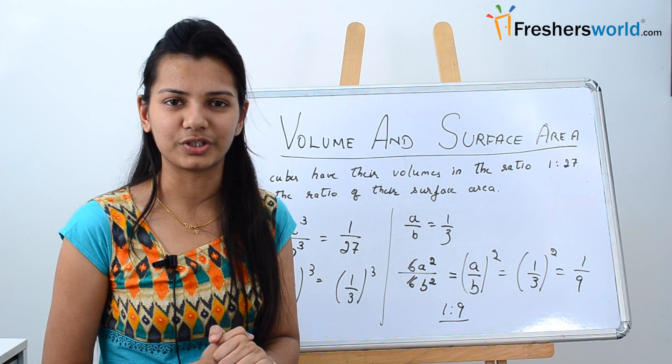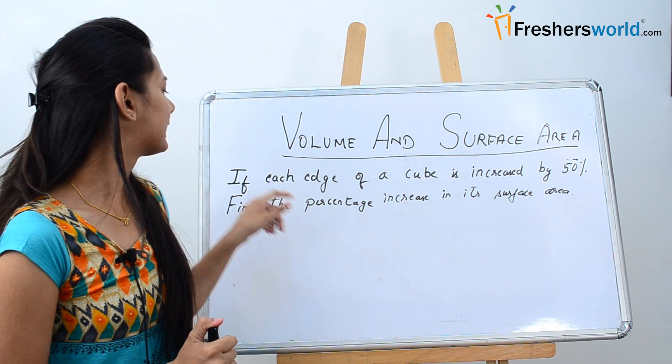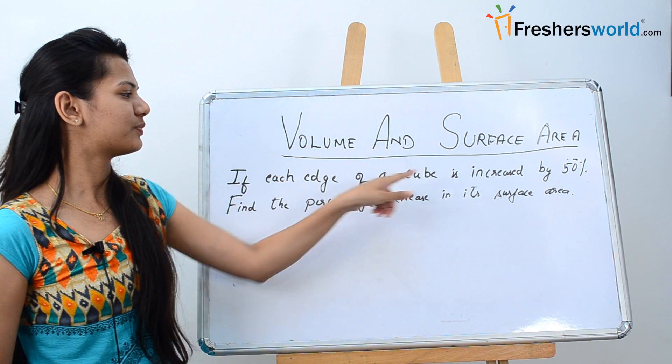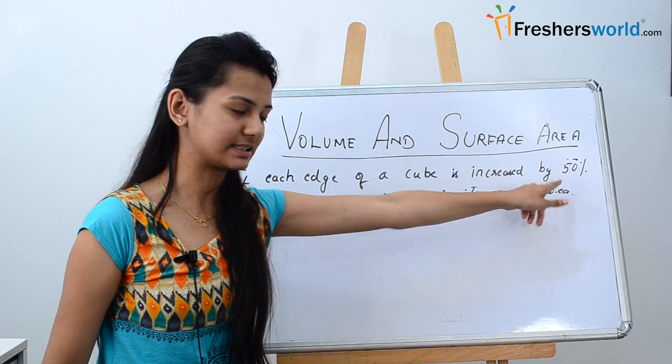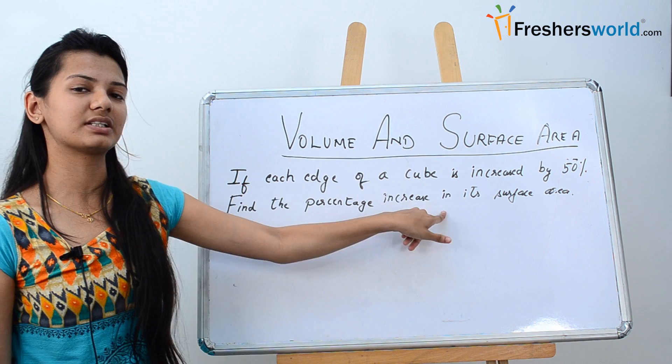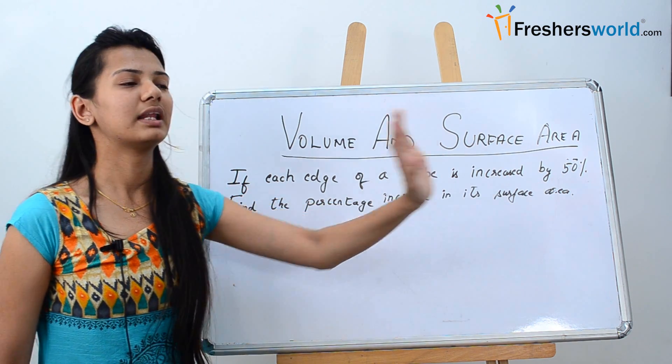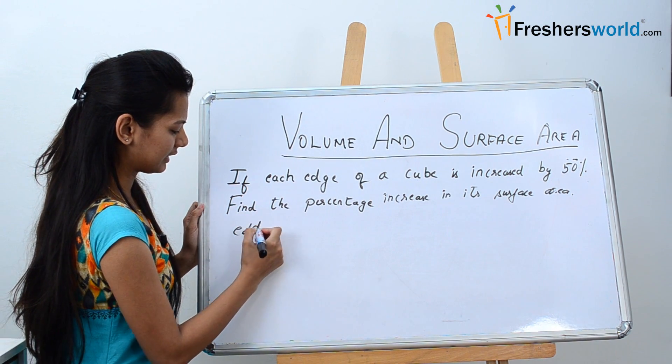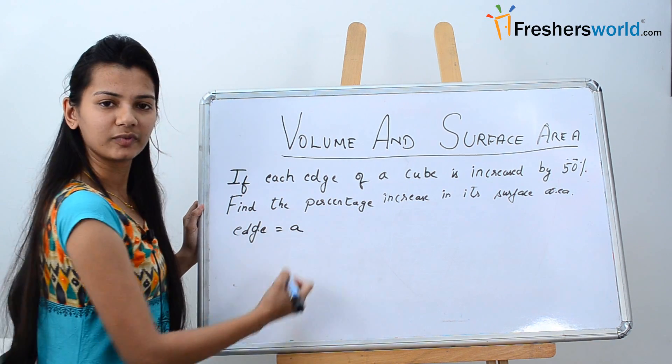Let's try another question of a similar type. The second question says, if each edge of the cube is increased by 50% find the percentage increase in its surface area. Now let's say let the edge of the cube be a.